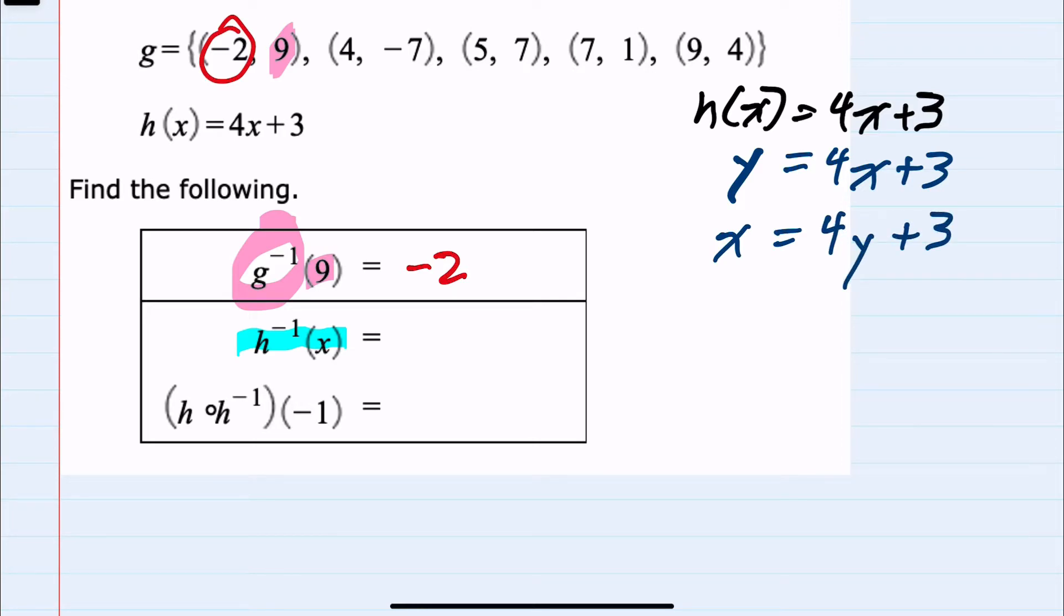And now that I've switched those two variables, if I solve this for y, that will be h inverse. So to solve for y, I can subtract the 3 over to the other side. x minus 3 equals 4y, and then I can divide by 4 on both sides. And we now have y equals x minus 3 over 4. This y is our inverse function. So the inverse function for h of x is x minus 3 over 4.